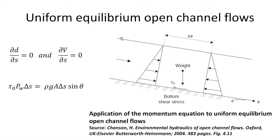Before discussing the experimental investigation, I want to summarise some of the theory around uniform and gradually varying flows. First, let's define the situation of uniform equilibrium flow. Uniform flow is not common in nature, as it requires straight channels with constant channel slope and shape. Uniform equilibrium open channel flow is defined as where the depth and mean flow velocity do not vary along the length of the open channel. The depth of this flow is defined as the normal depth.